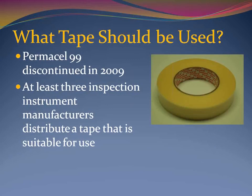So which tape is the correct tape to use? Note 5 in the 2009 version of the Tape Adhesion Standard stated that Permacel 99 was found suitable for use — it wasn't required, but it was found suitable. Unfortunately, this tape was discontinued in 2009 and is no longer available. However, at least three manufacturers of coating inspection instruments now produce a tape that is suitable for use with the standard.